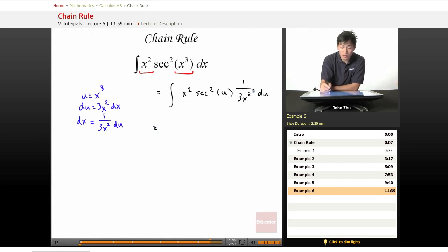the x squared terms cancel out and we're left with one-third secant squared u du. This looks very much like our previous problem, except the u here is a different substitution.